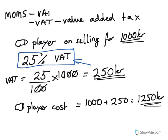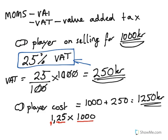Instead of doing it in these different steps — first working out the VAT and then adding it to the original price — it's actually much smarter to work out the CD player cost by taking 1 plus the VAT percentage as a decimal. The VAT is 25%, which is 0.25, so we use 1.25 of 1,000. Moving the decimal point three places gives us our final answer: 1,250 kronos.